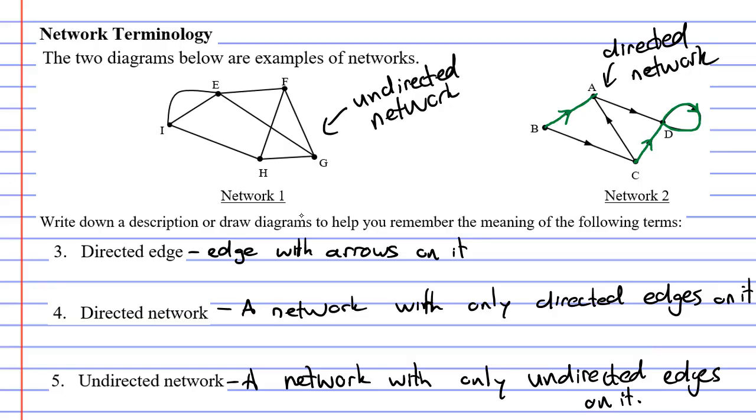Now it is possible to have a network diagram that has a combination of directed edges and undirected edges. But if you get that it means that it is neither a directed network nor an undirected network.